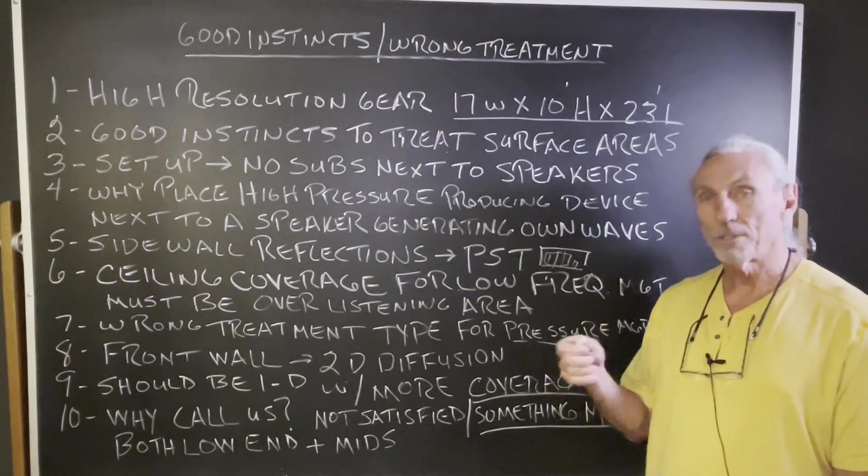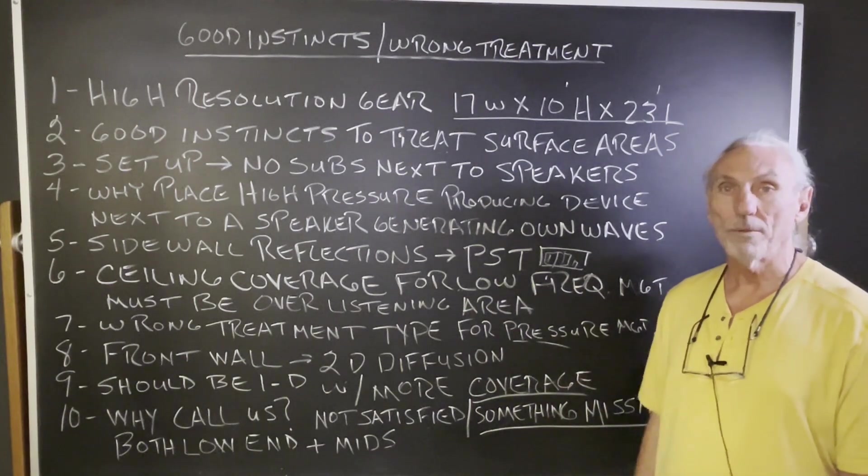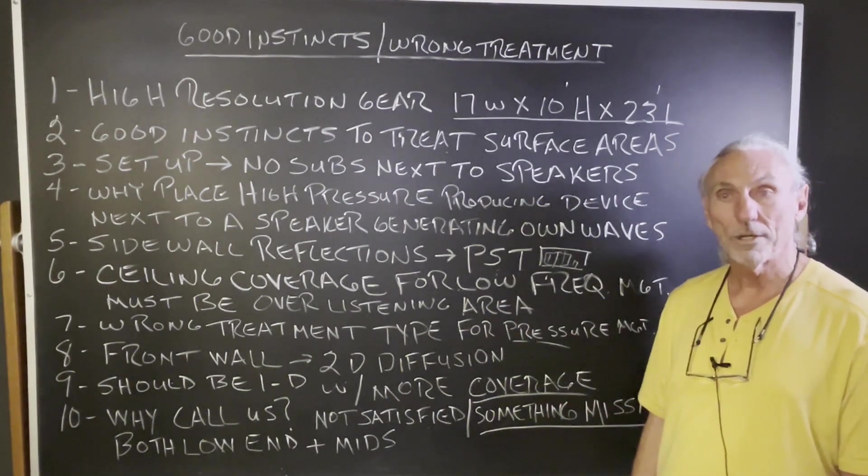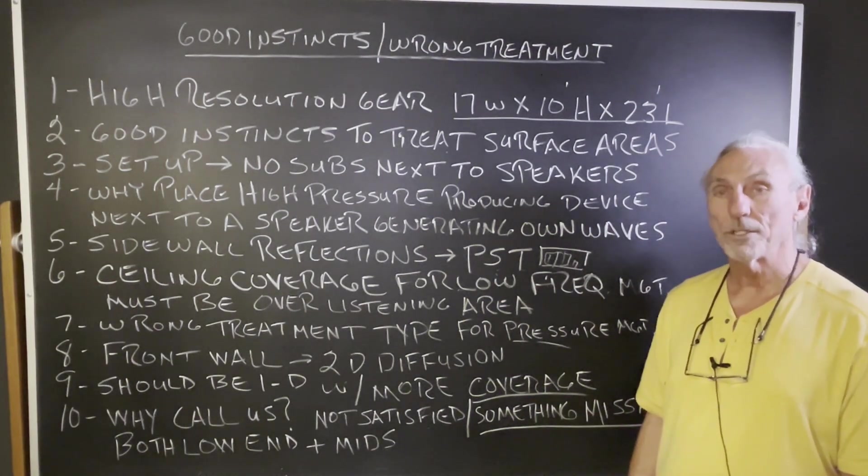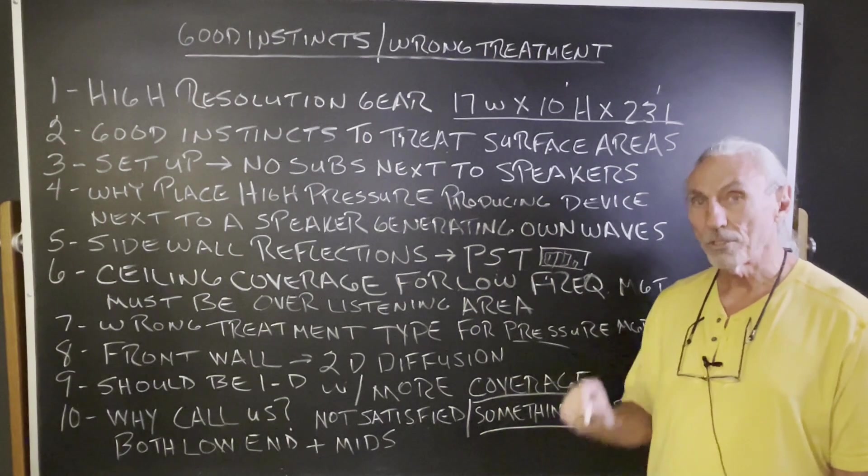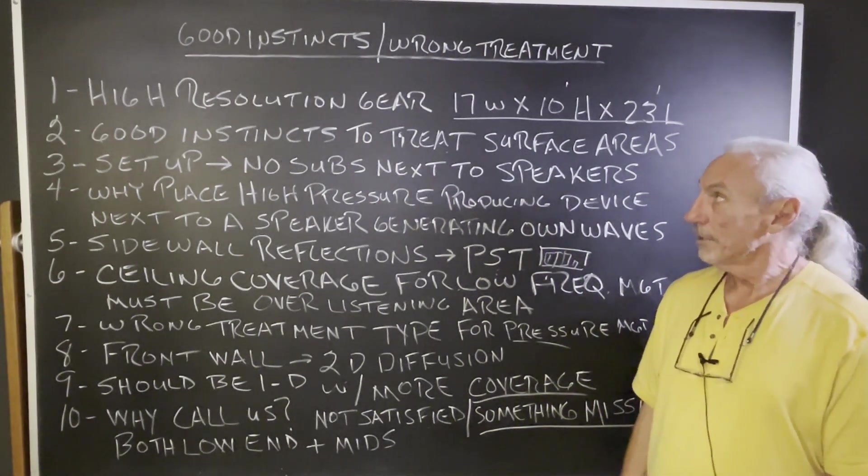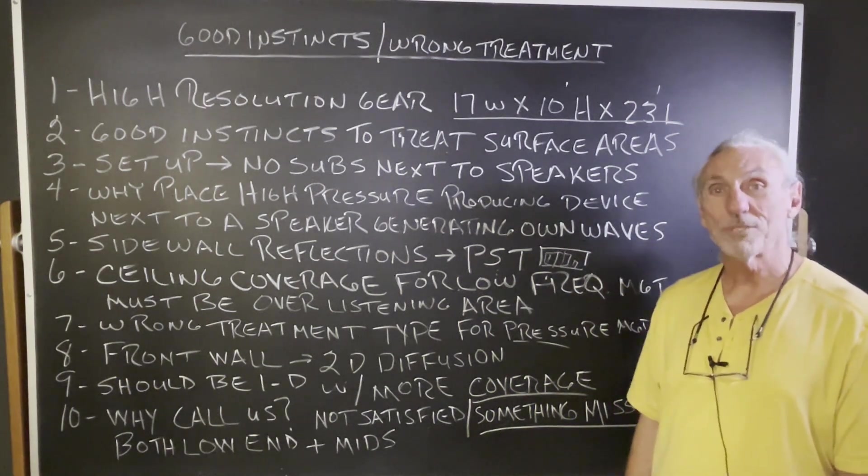If we get the pressure under control, the sidewall reflection issues, primary, secondary and tertiary, the two-dimensional diffusion on the front wall will function better. It won't be as good as one, but it'll improve. Good instincts, wrong treatment type. Hope this helps. Thank you.